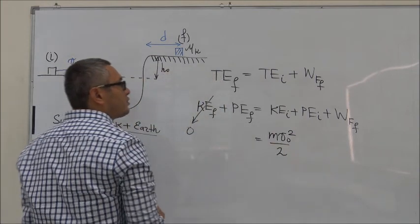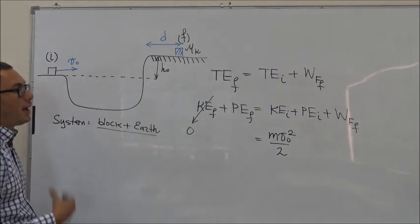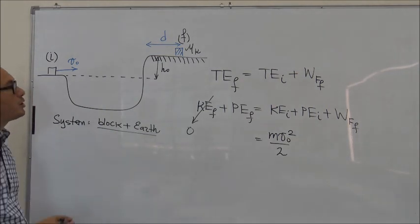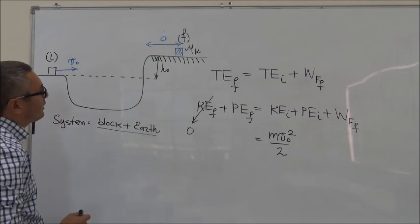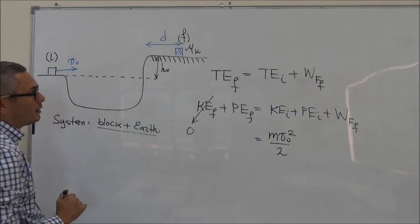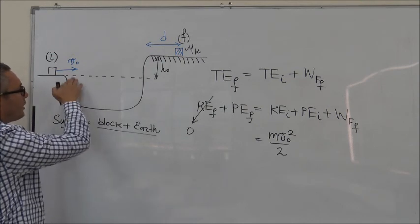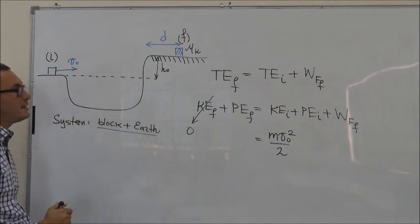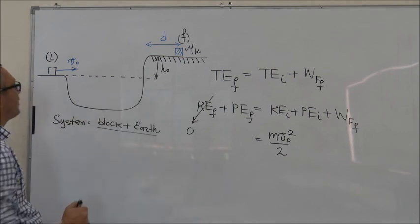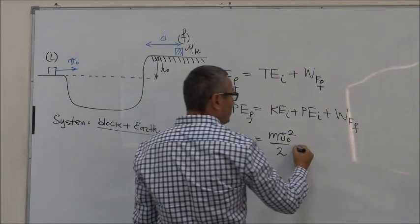What about potential energy? Potential energy, as you know, is relative, so we have to choose a level which we take as zero. From the point of view of making the problem easy, it would be better if we choose this level as a zero level for potential energy. In that case, initial potential energy of the system is equal to zero.